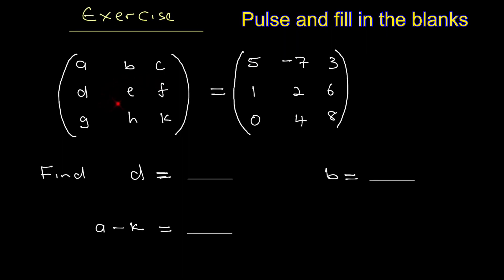Here is an example. We've got two matrices that are equal. We need to find D, B, and A minus K. Pause and answer these questions.